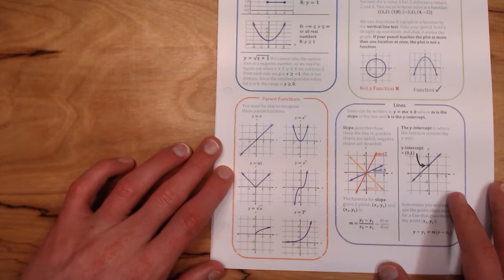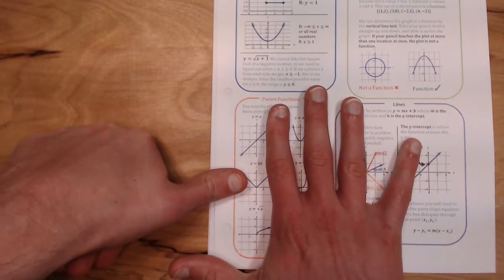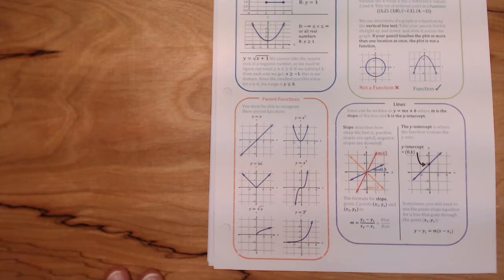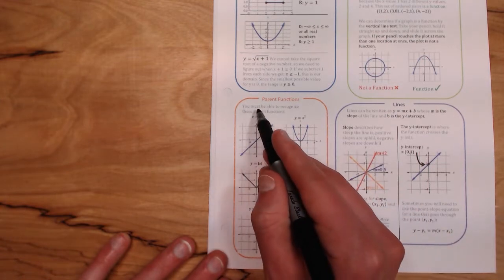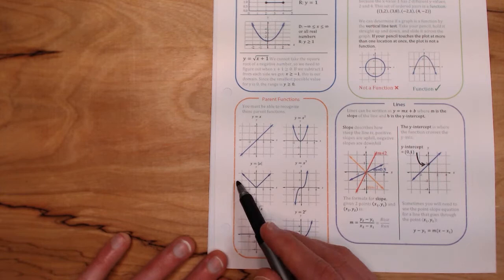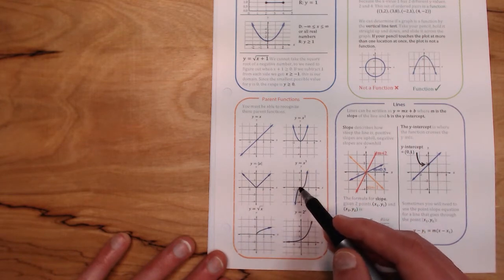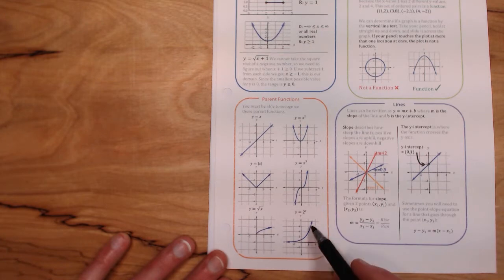Thing number one is right down here where it says parent functions. There are six parent functions that you need to know to do well on the test. They are lines, parabolas, absolute value equations, cubic functions, square roots, and exponential functions. I want you to know how they look and what the basic formula is.